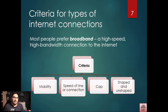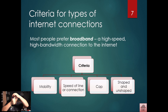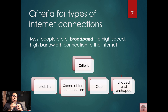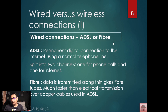What is meant by shaped, unshaped, and throttling? When I throttle a connection, I'm limiting the speed. When I shape it, I'm giving priority to certain things during certain time periods — so if your line is shaped between 5 p.m. and 7 p.m., priority is given to certain items, maybe downloads over uploads. If it's unshaped, the speed is not limited or interfered with at all.